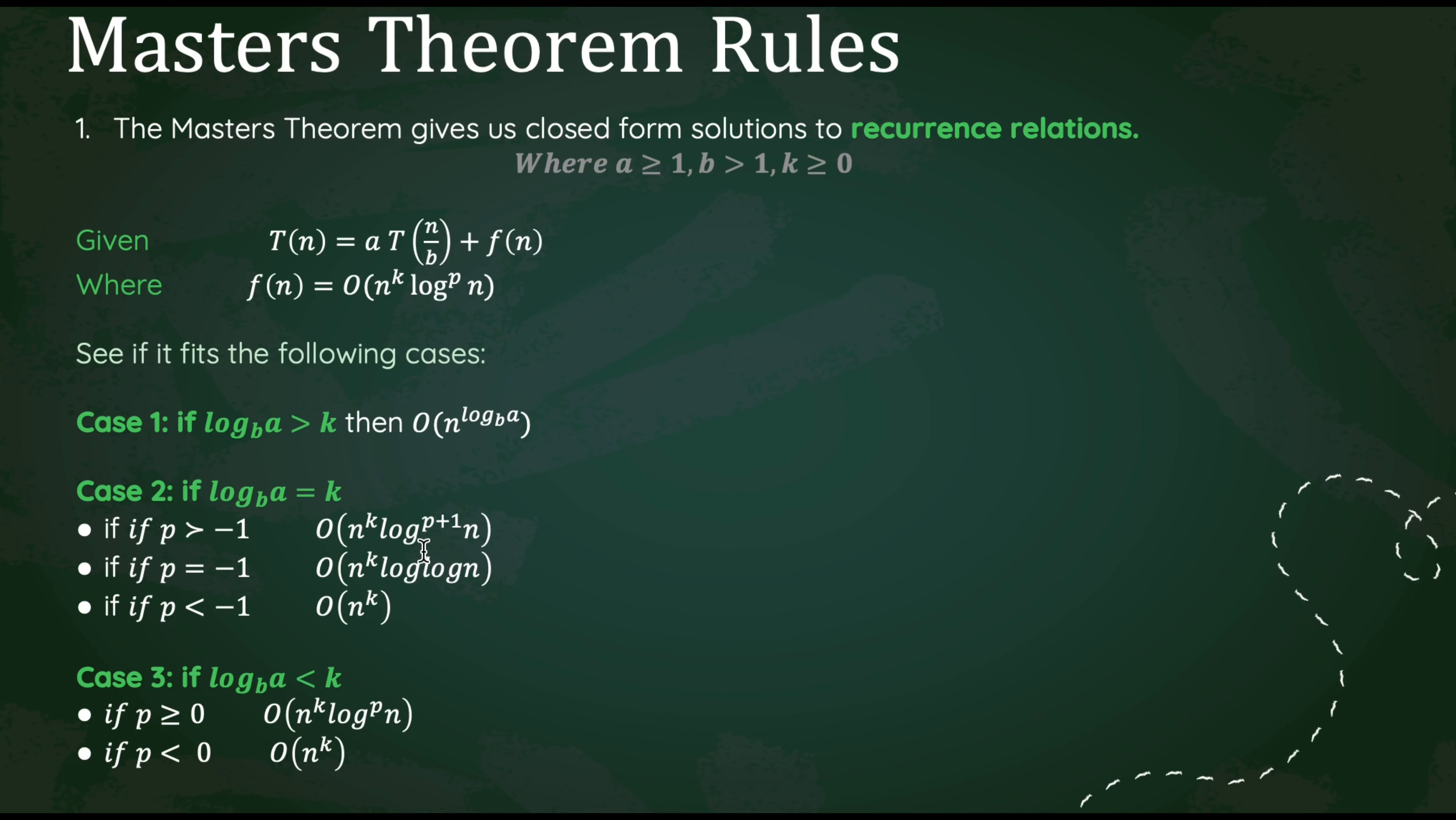From our T(n), we can find our a and b value. From our f(n), we will be able to find k and p. We will use log base b of a and k to compare our main cases. If we have any subcases, that will be determined by our p value.